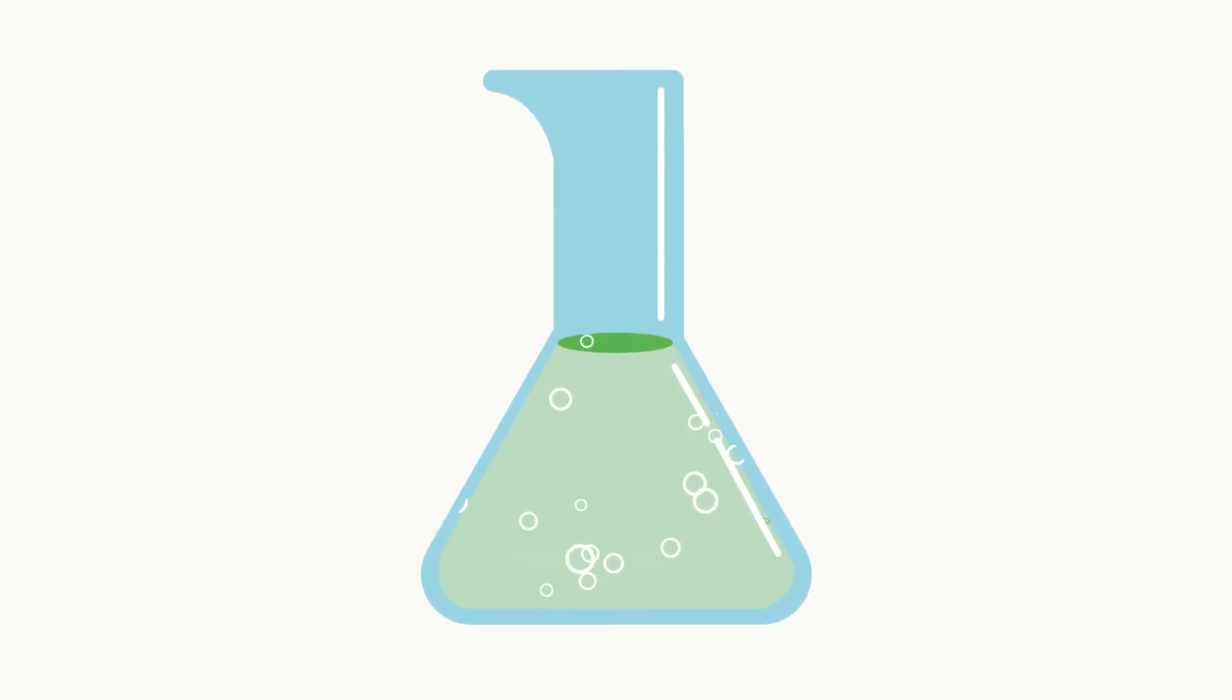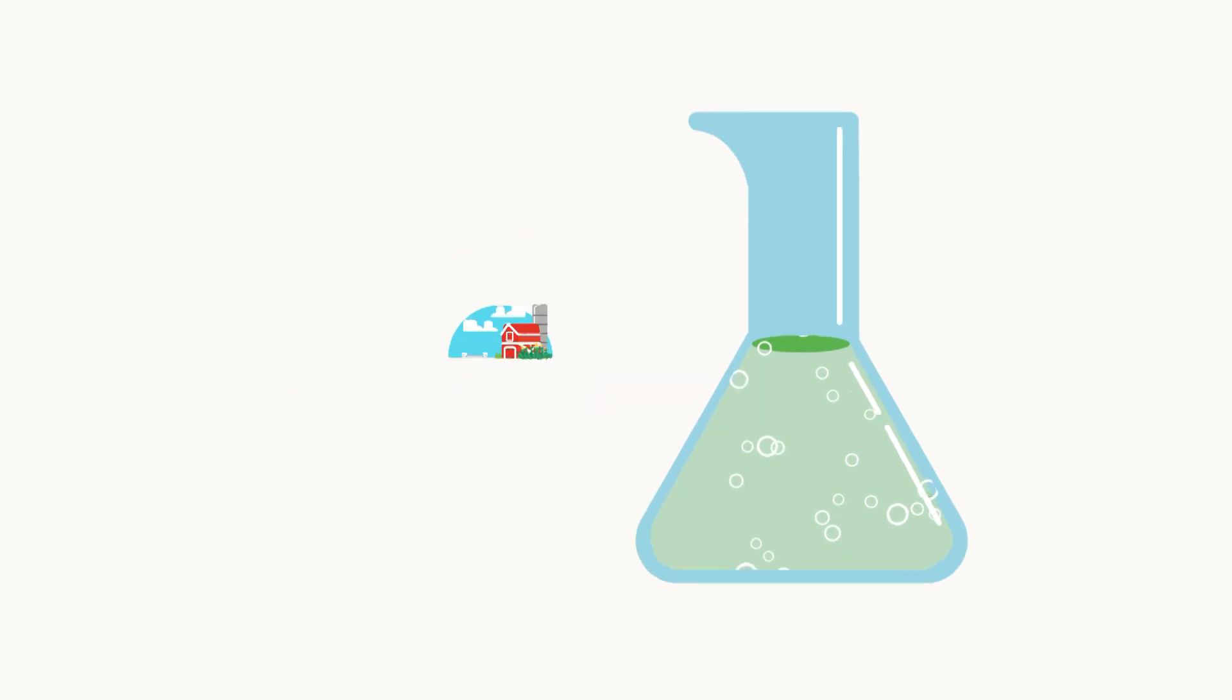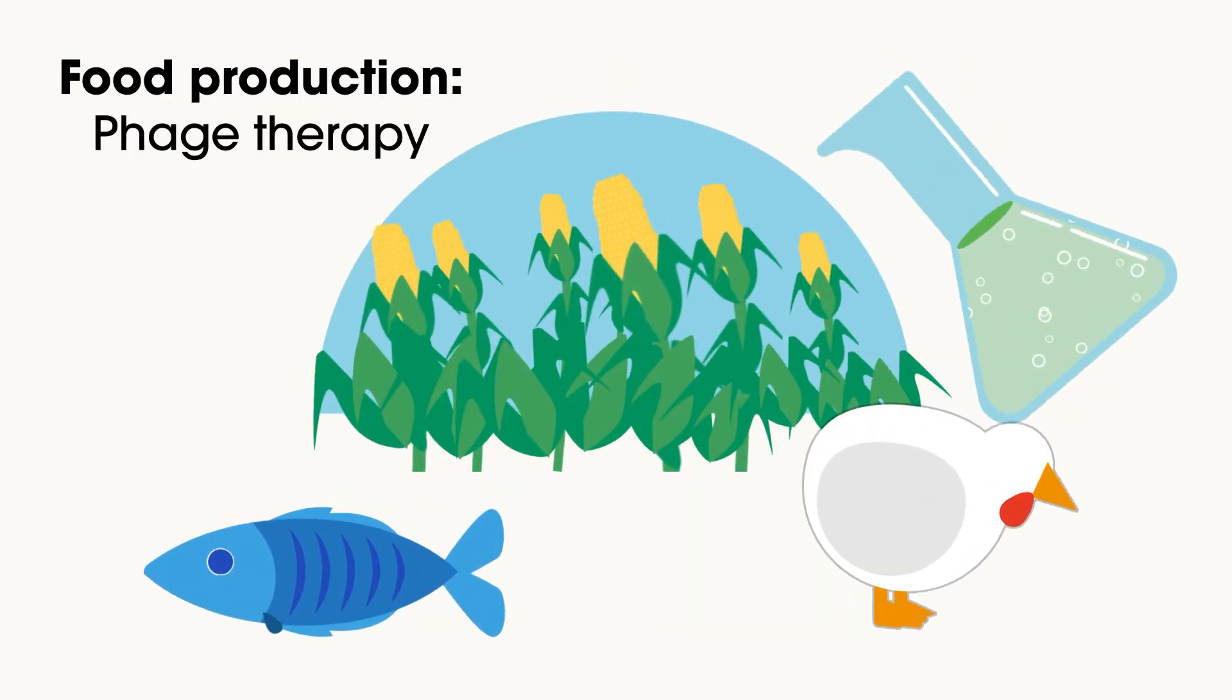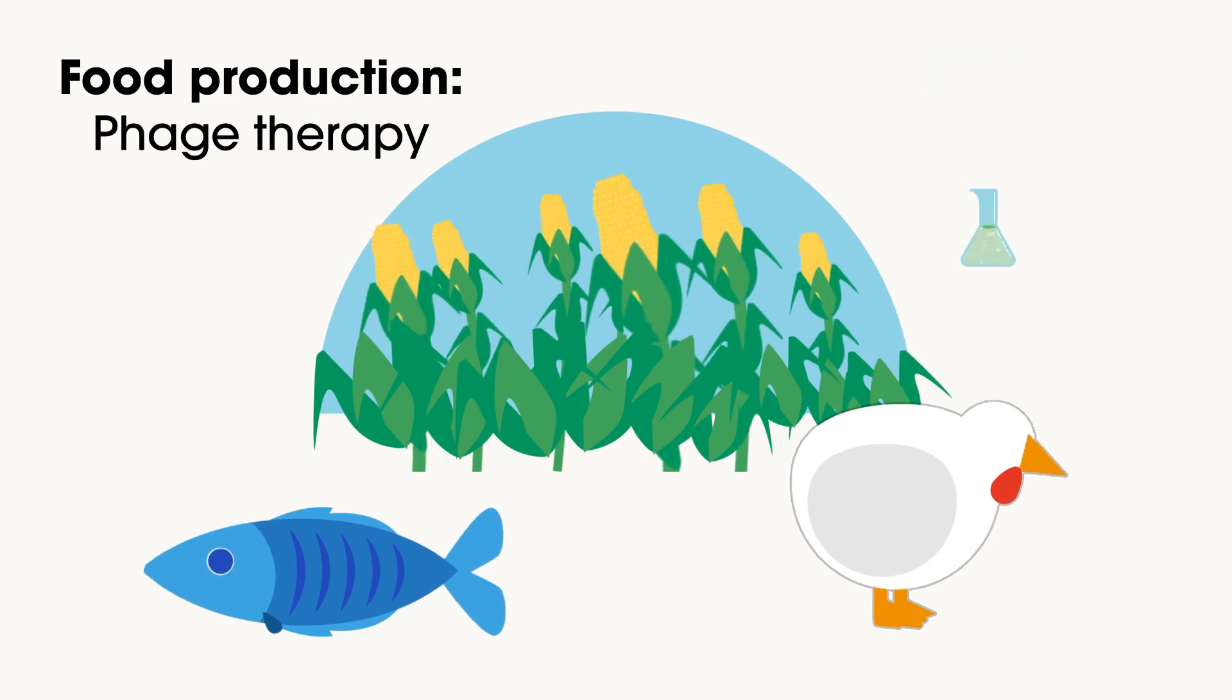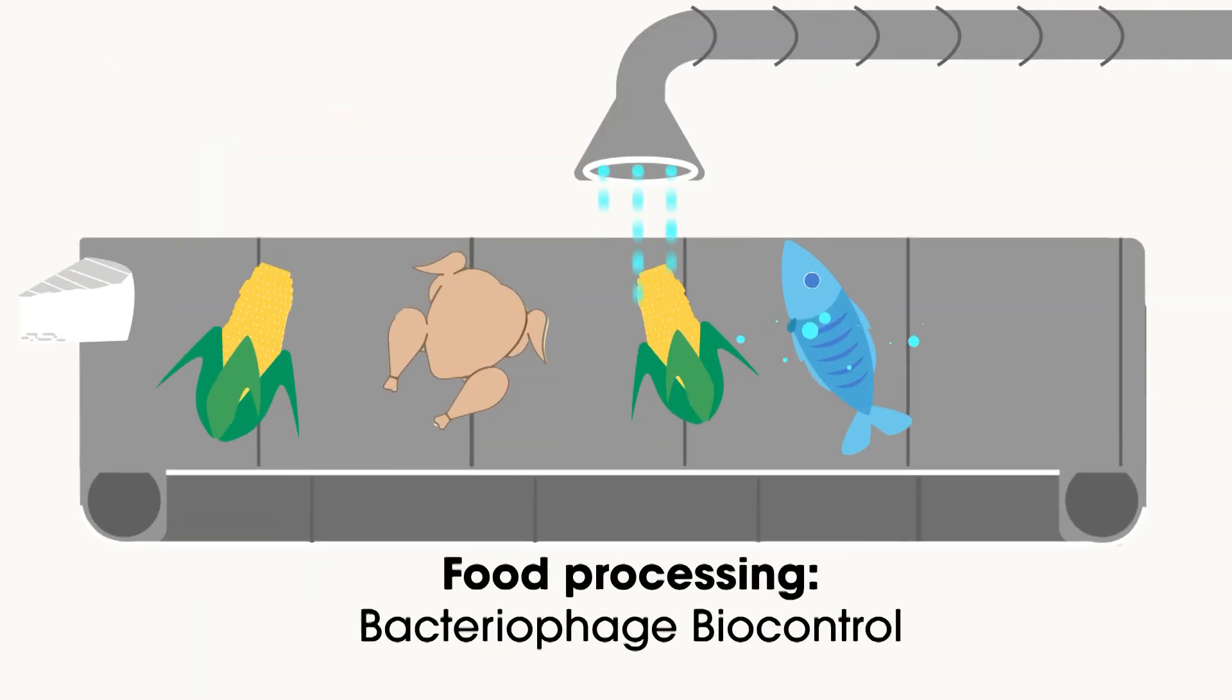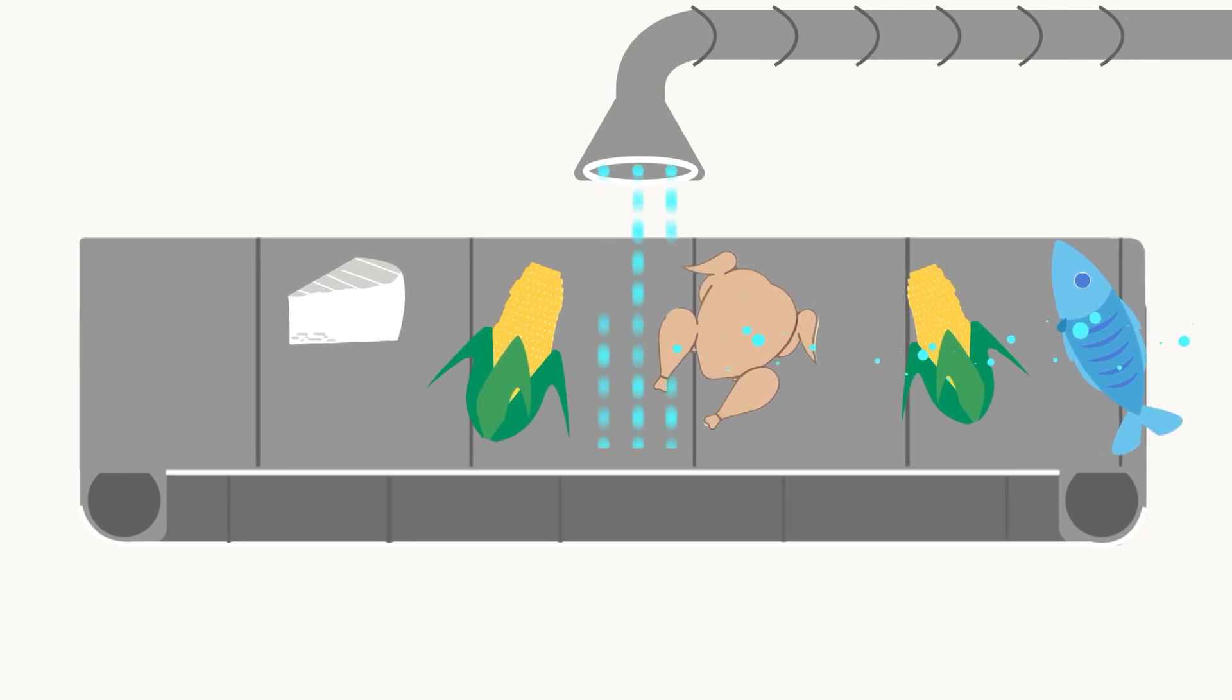Effective phage cocktails could be applied at different stages of the food chain to prevent the occurrence and growth of non-desired target bacteria. In the primary sector, as an alternative to antibiotics to control infections during food production. And in food products and food processing environments during food processing.